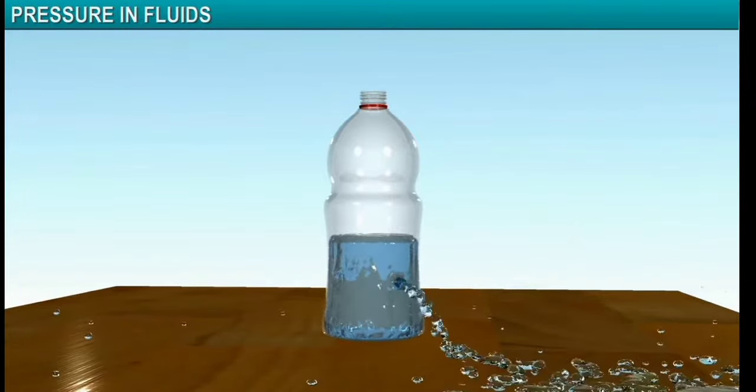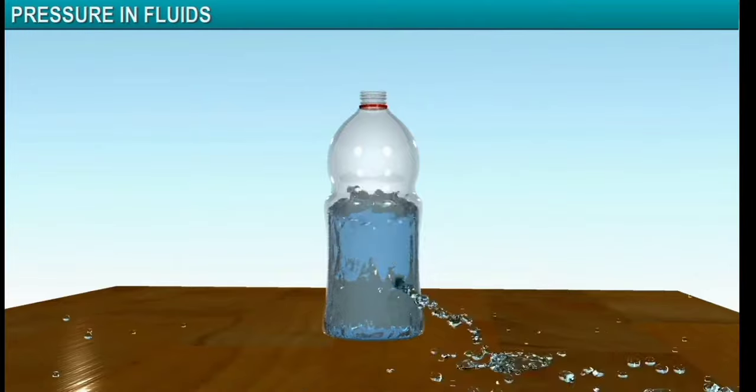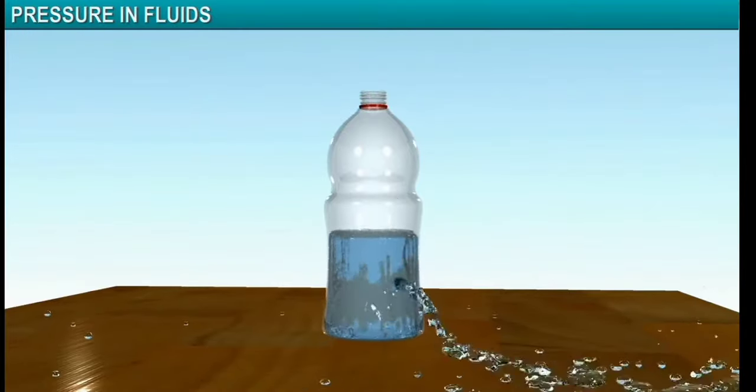Then, make a small hole in the lower half of the wall of the bottle. You will see that the water gushes out through the hole with considerable velocity. This velocity is due to the pressure of the fluid at that point.